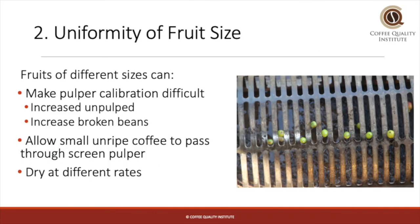Next, we look at uniformity of fruit size. Fruits of varying sizes can pose problems in the pulping and potentially in the drying. Since pulpers work by applying pressure to the coffee fruit, fruits of different sizes will receive different amounts of pressure. If the pulper is calibrated to correctly pulp the larger fruit, smaller coffee fruit may pass through unpulped. If it is calibrated for the smaller fruit, then the larger coffee fruit will receive too much pressure and the beans will likely become damaged.